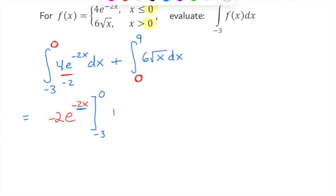Plus, now we want to integrate 6√x. Remember, 6√x is really 6x^(1/2). Using the power rule for integration, add 1 to the exponent: 1/2 plus 1 is 3/2. Then divide the coefficient 6 by 3/2. When you divide 6 by 3/2, you get 6 times 2/3, which is 4x^(3/2). We're going from 0 to 9.